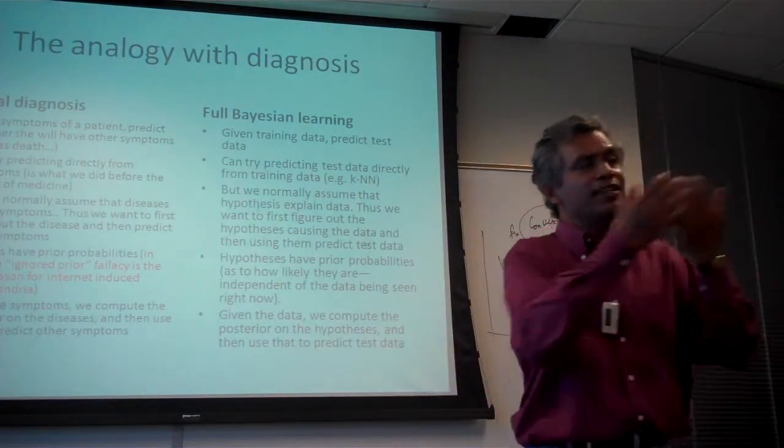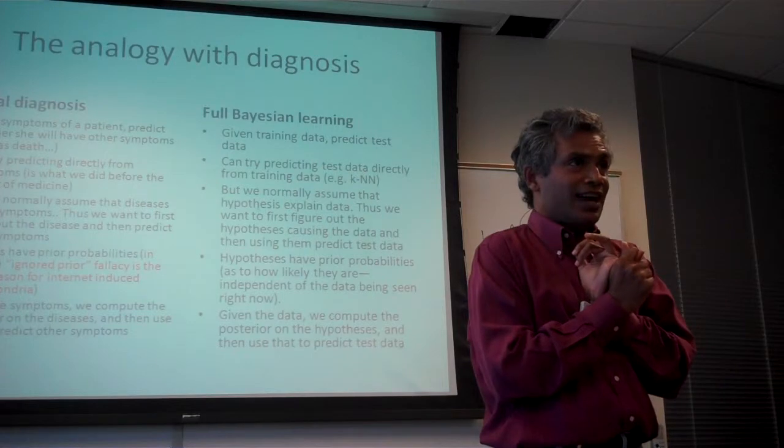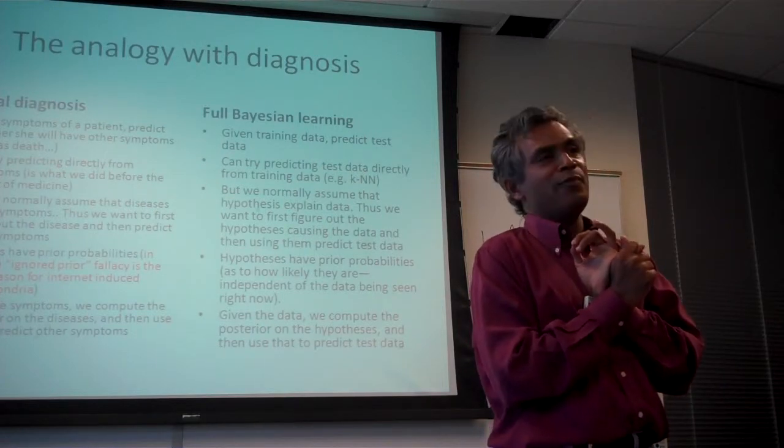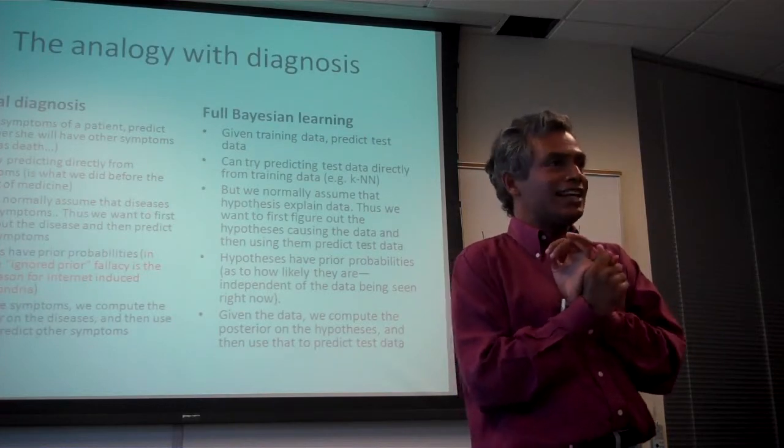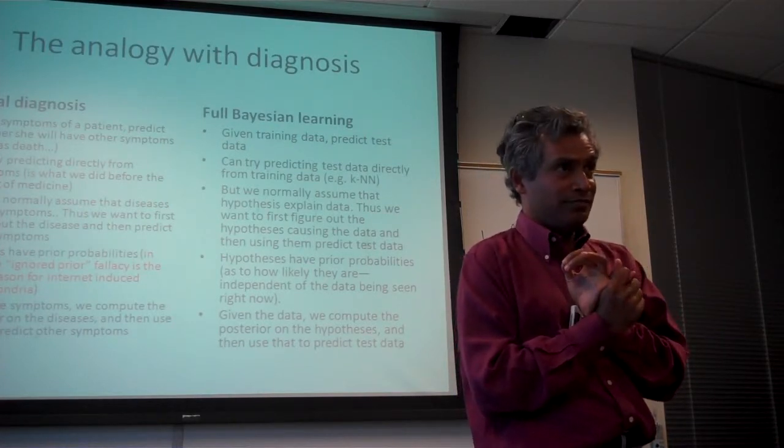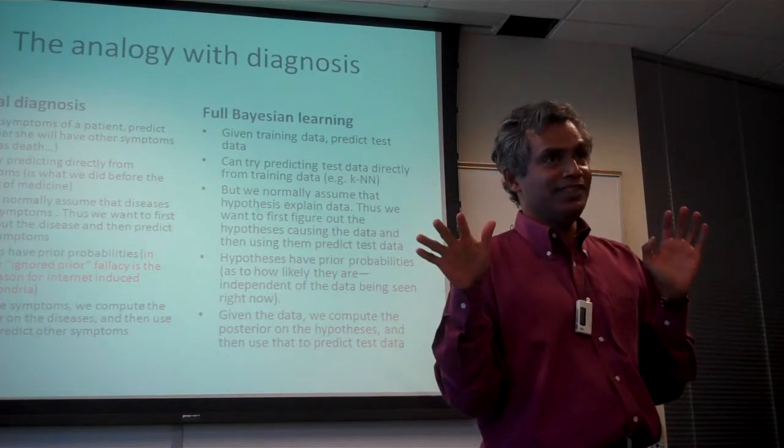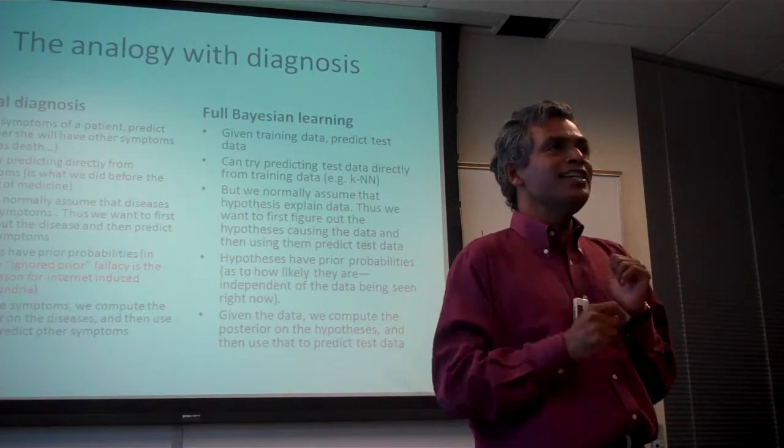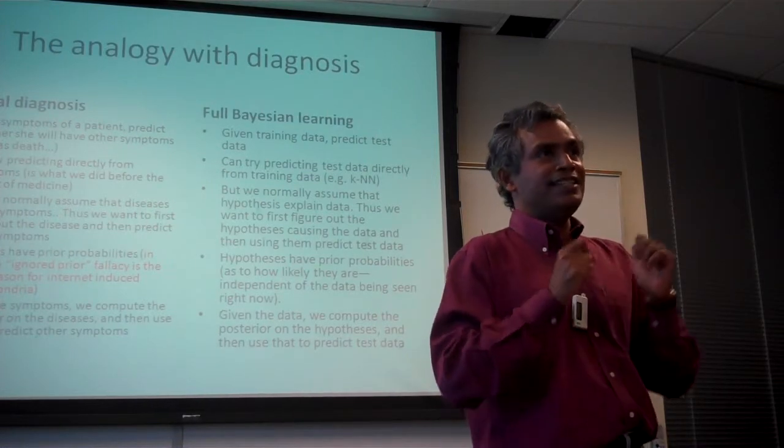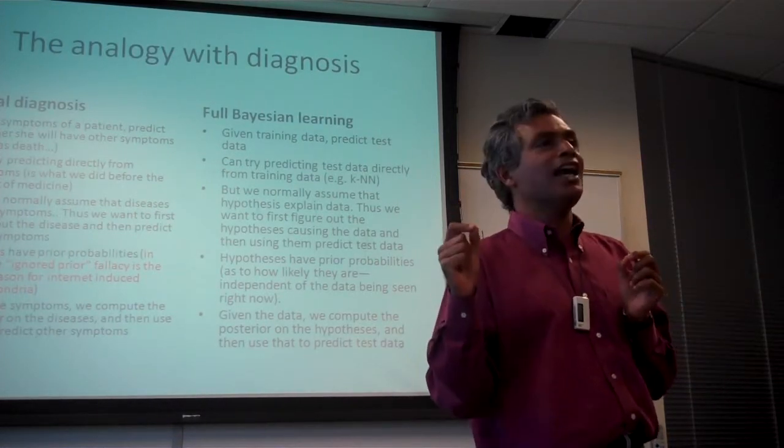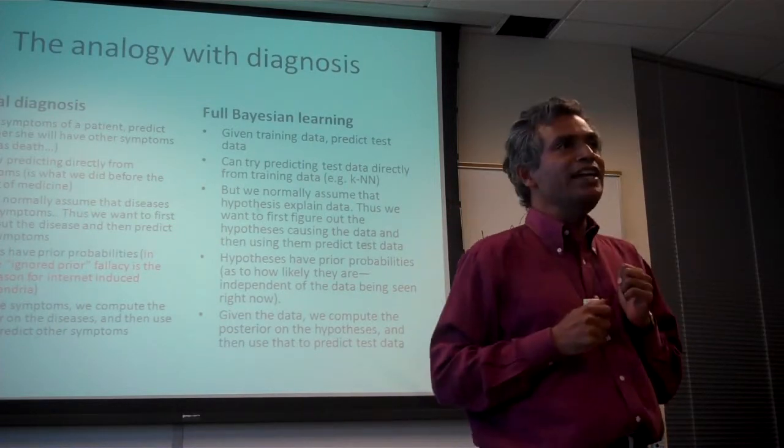Here's an interesting example: based on your symptoms, either you could be suffering from Ebola or common cold, 0.5 and 0.5, let's say. Suppose it turns out that common cold will give you a runny nose tomorrow, and Ebola will give you a runny nose along with all other runny things. What's the probability of runny nose tomorrow? It's 1.0, because either you are suffering from Ebola or common cold.